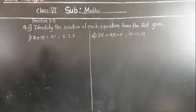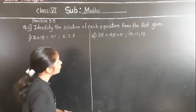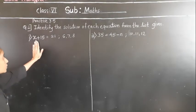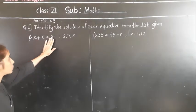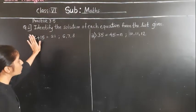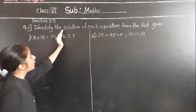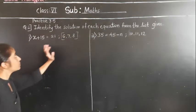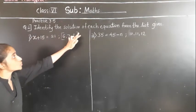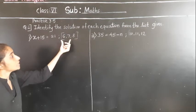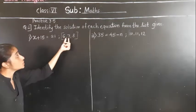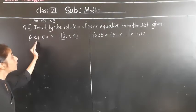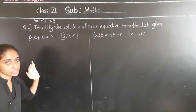Question number 2: identify the solution of each equation from the list given. The equation is x plus 15 is equal to 21. We have to identify — meaning we have to check using these numbers. This is the given list. Whichever number, if we put in the place of the variable, makes LHS equal to RHS.